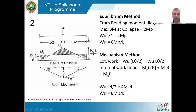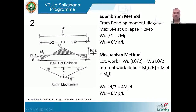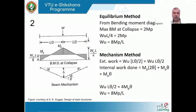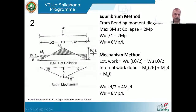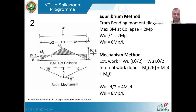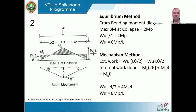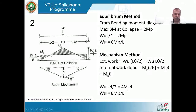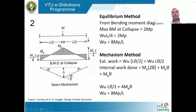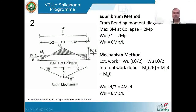The resulting net diagram shows the fixed moment variation from the end up to the point of contraflexure, where the moment changes sign from negative to zero and then becomes positive, reaching its maximum at the center. A similar situation exists on the other side.